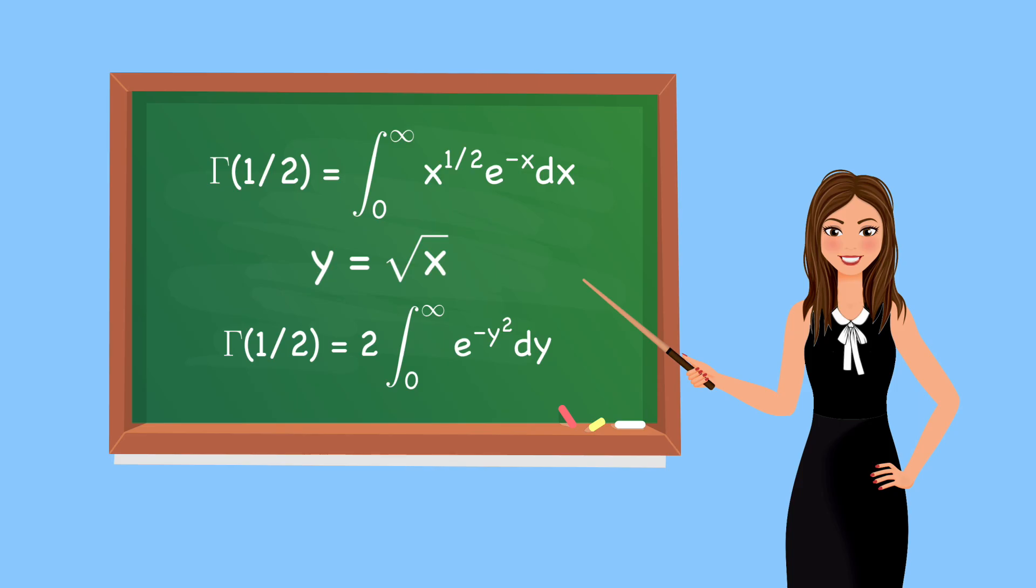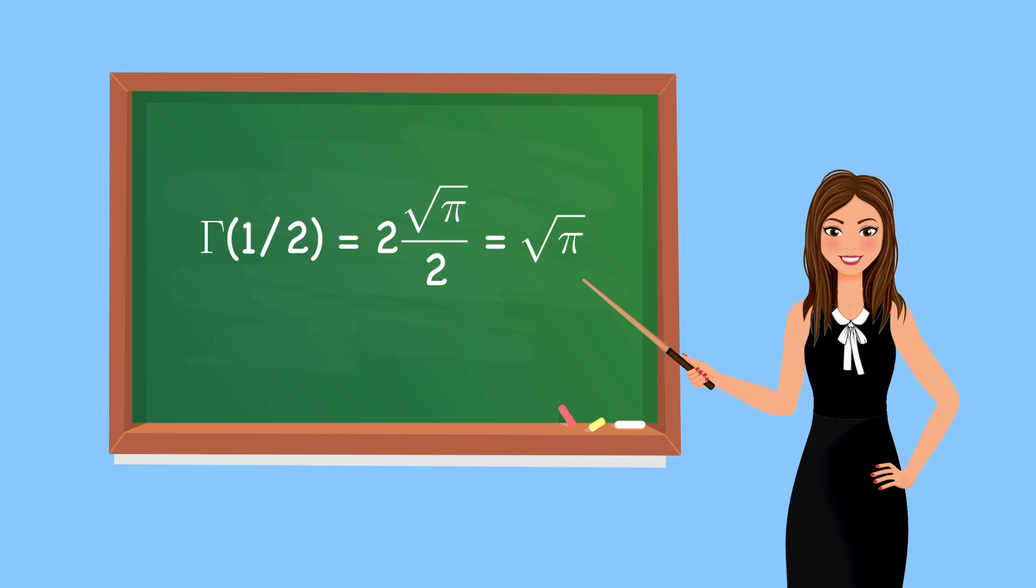Yes, it's the integral of the Gaussian function we saw earlier. Or specifically, half of that Gaussian function. Thus, we can substitute in the square root of pi over 2, resulting in the square root of pi.